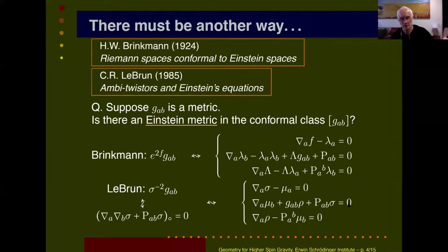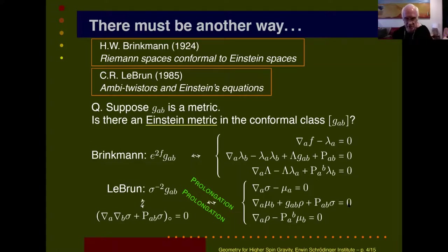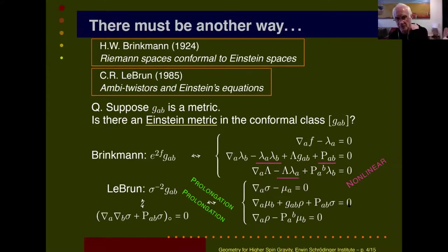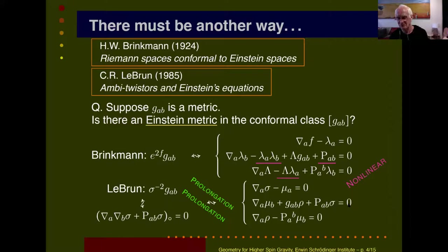You introduce a name for the derivative of sigma, calling it mu, and you get a system of equations. Comparing the two approaches: LeBrun's maneuver gives a linear system — linear in sigma, mu, and rho — whereas Brinkman's system is nonlinear: it has the square of lambda, capital Lambda times little lambda, and this rho tensor just sitting there by itself.